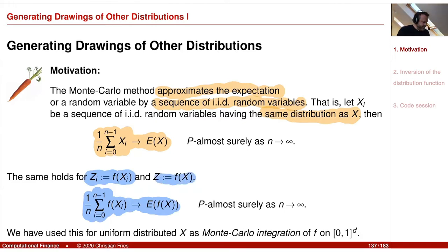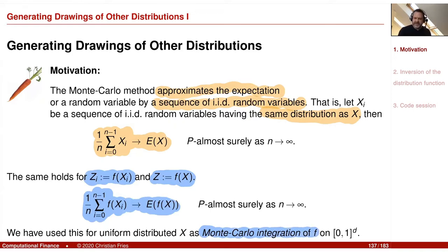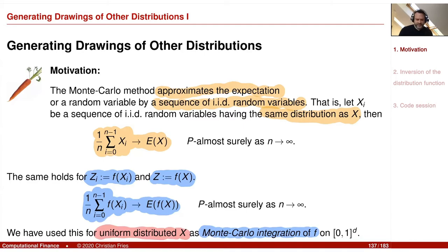This converges to the expectation of the random variable Z, if F(X) is integrable — if the expectation exists. We used this result as Monte Carlo integration of F for the special case where the random variable X was uniformly distributed, because then we can interpret the expectation of F(X) as an integral of F. That was our integration method.